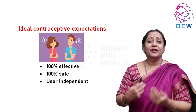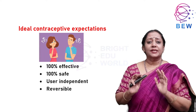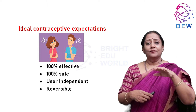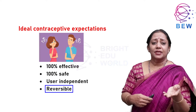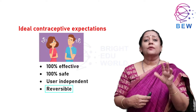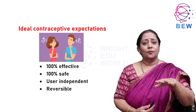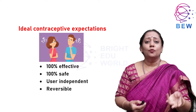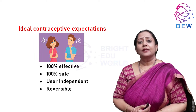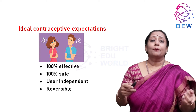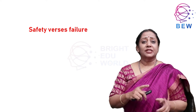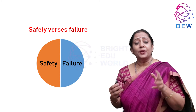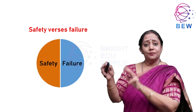At the same time, the contraceptive should be reversible. People want to use contraception for a particular period of time, not necessarily throughout their life. They should be able to stop the method whenever they want to have a baby or switch to something else. The basic contraceptive dilemma every couple faces is about safety versus failure — how safe is the method and what is the failure rate. People want something which is very safe with minimum failures.